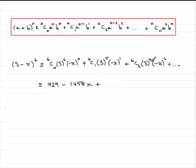Then do 6C2 times 3 to the power 4, and you should find you get 1215. And then you've got the x squared, and then plus and so on.